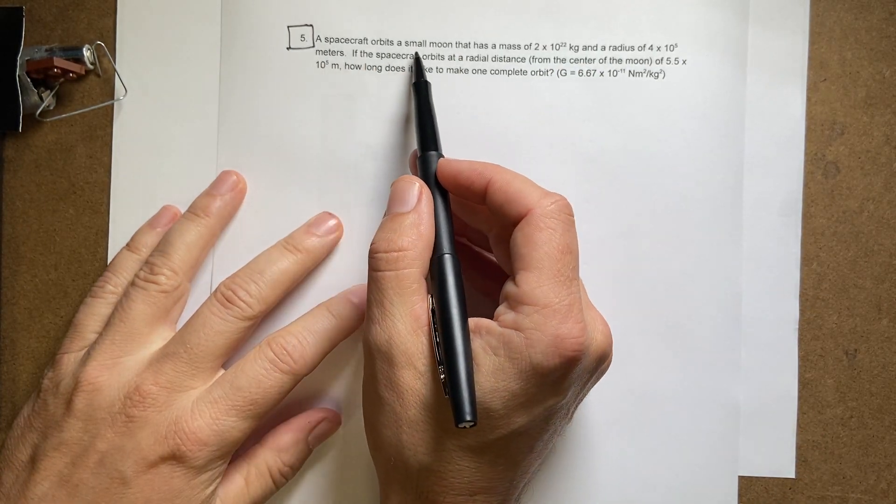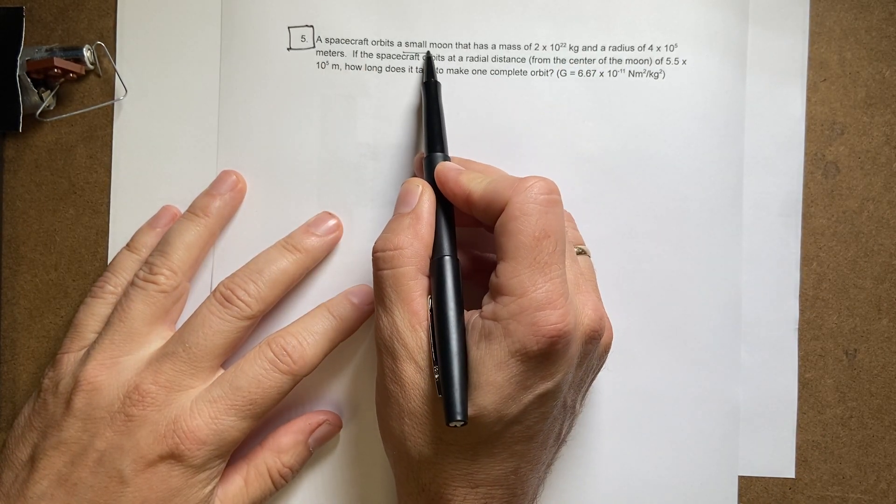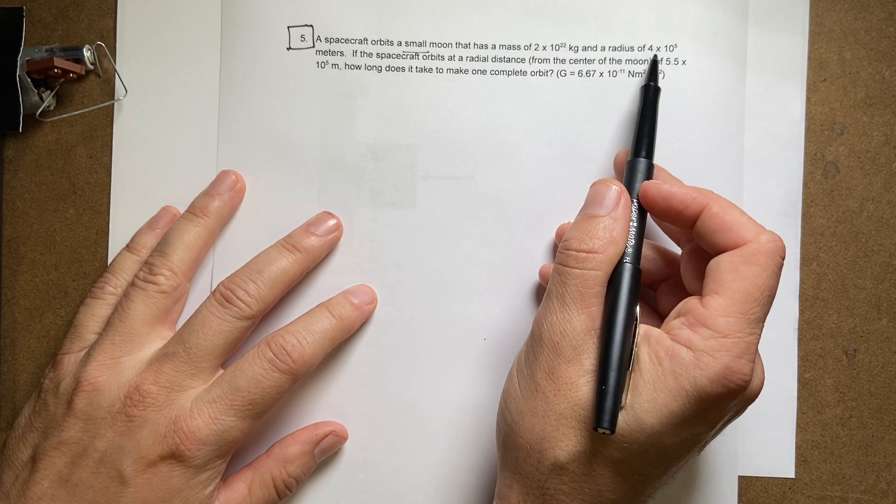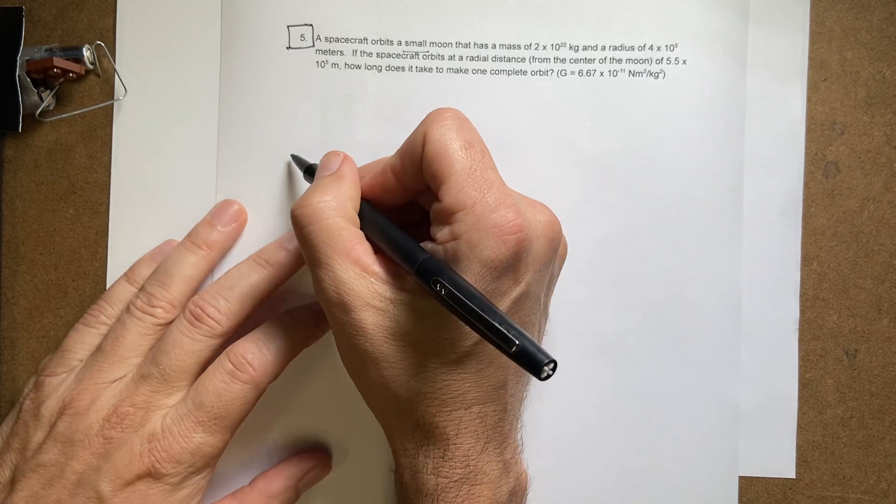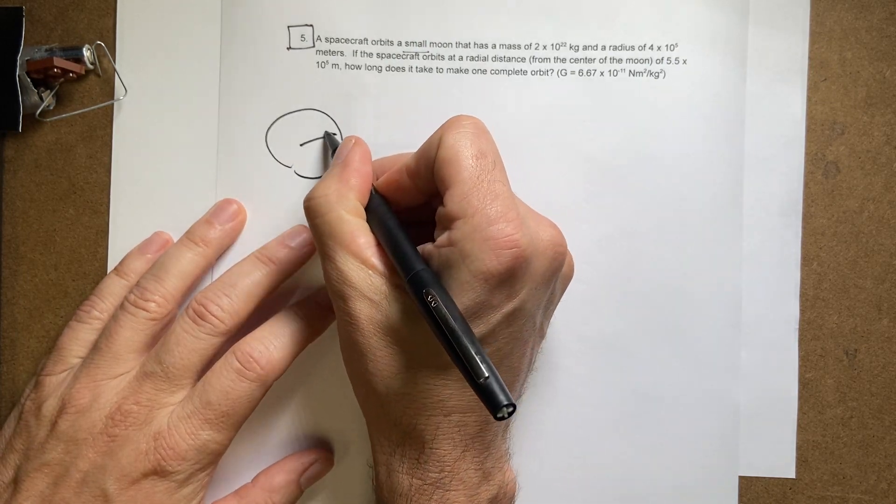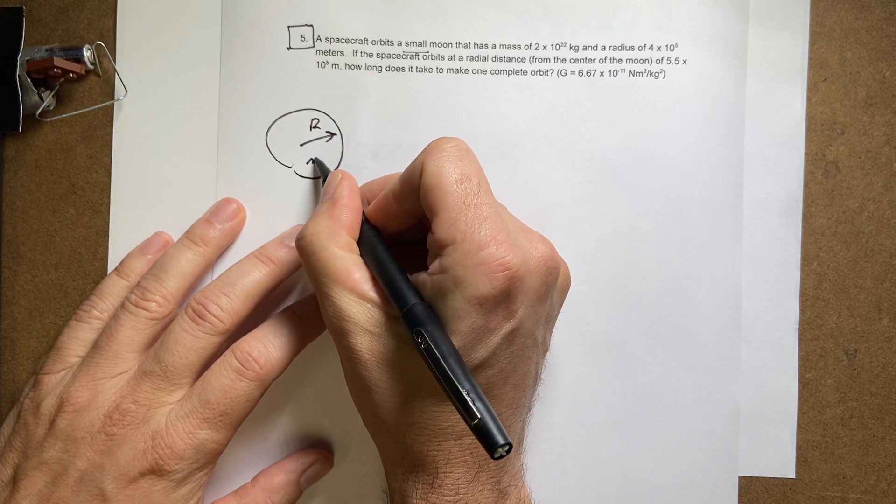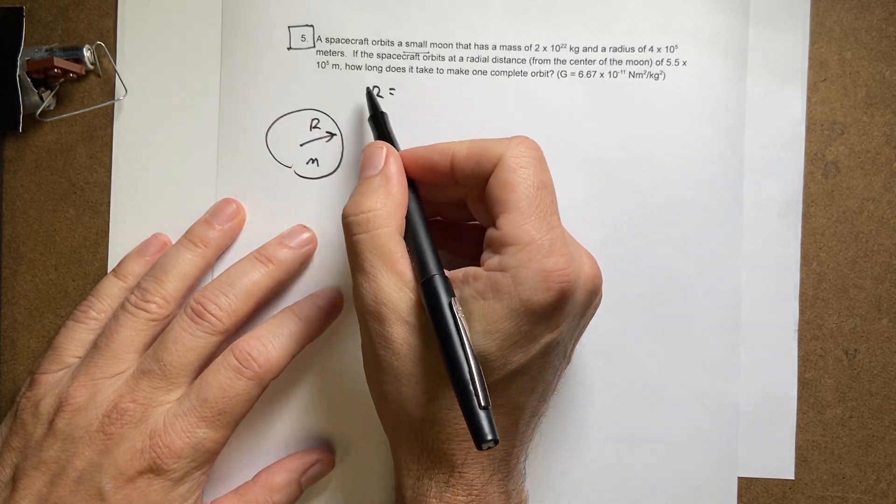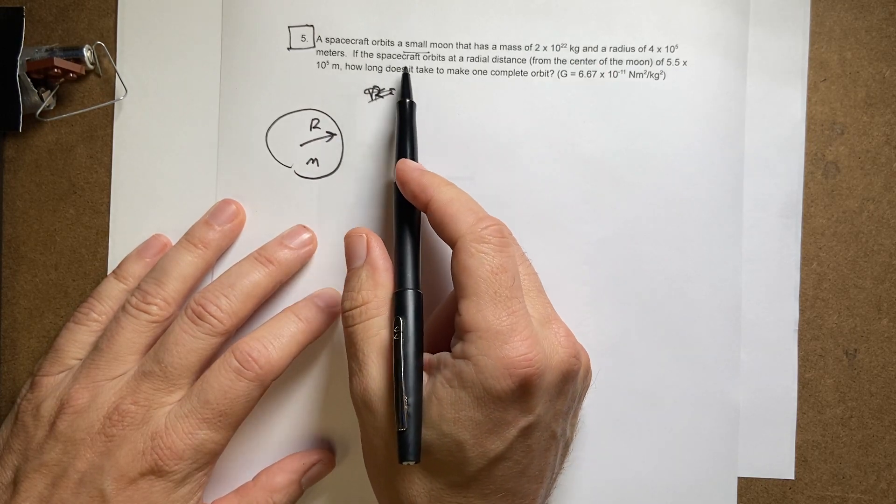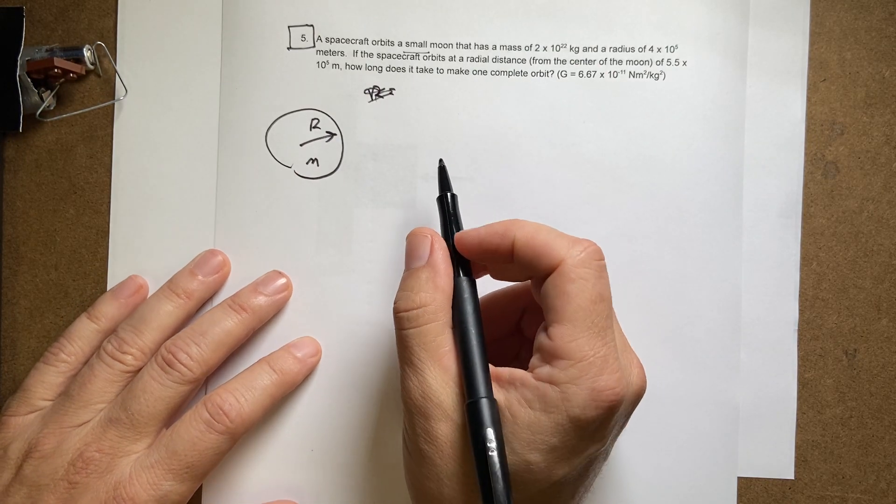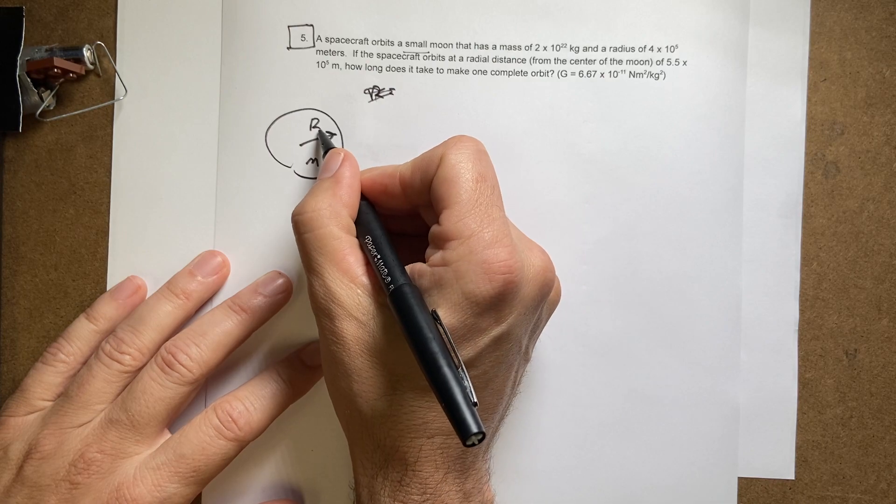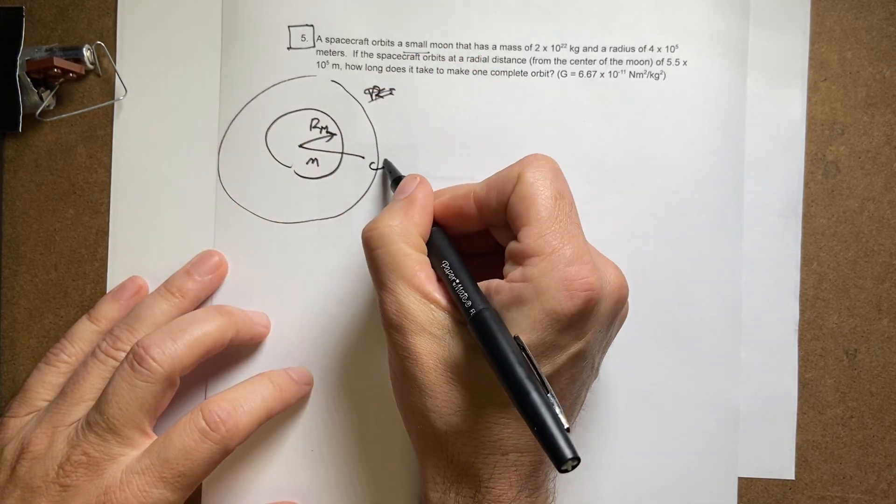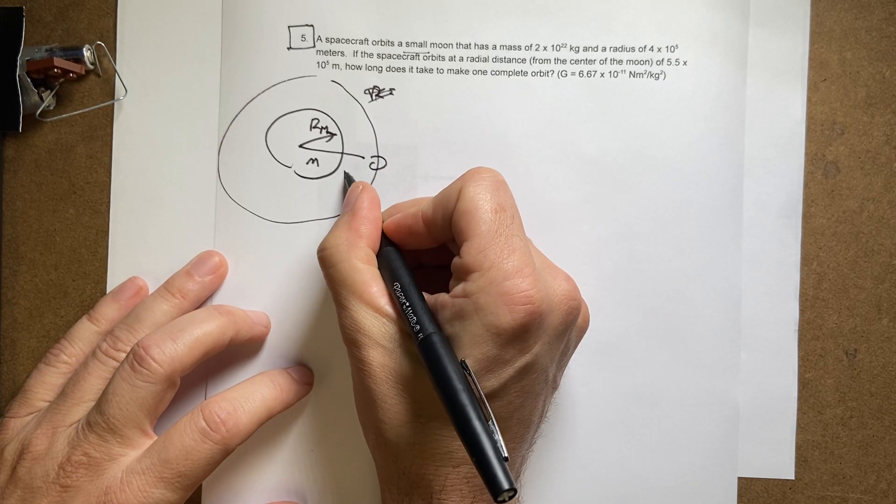A spacecraft orbits a moon, a small moon, not a space station, that has a mass of 2 times 10 to the 22nd kilograms and a radius of 4 times 10 to the fifth meters. So let's just draw a little moon here, Rm, I'll leave it like that, and where R equals, I don't have to put that in. The spacecraft orbits at a radial distance of, so let's call this Rm and then here's my orbit and this will be just lowercase r.